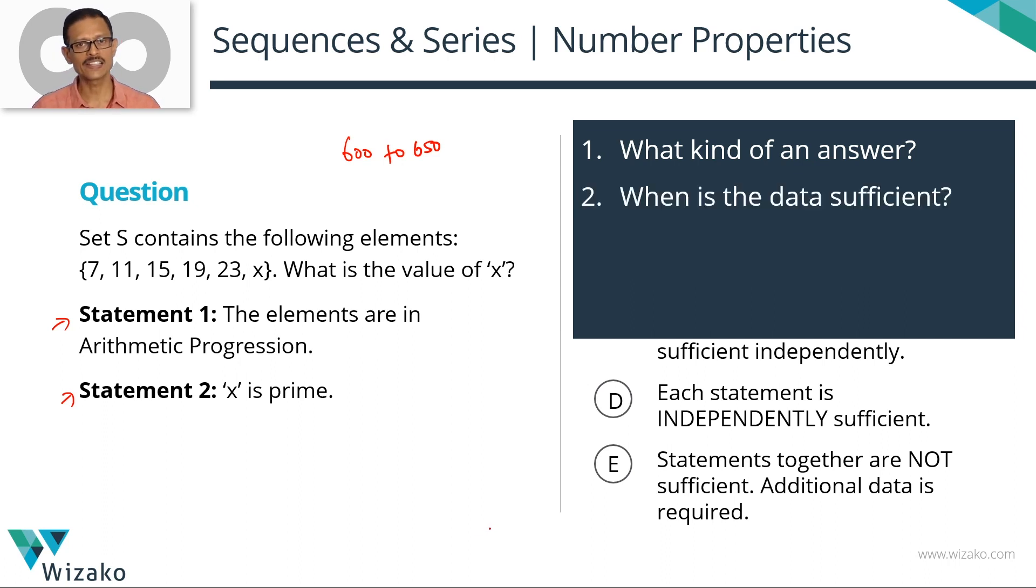Second question that you need to get an answer is when is the data sufficient? In any DS question that's asking you to find out the value of a number, the data is sufficient when you have a unique value from the information given in the statements. If you're able to say x equals 29, there is only one value that's possible. If I use the information in the statements, the data is sufficient. I'm just giving you an example.